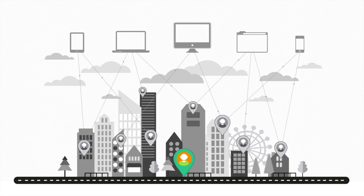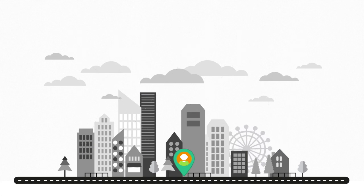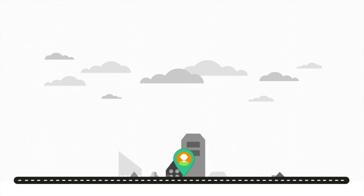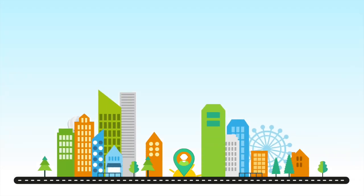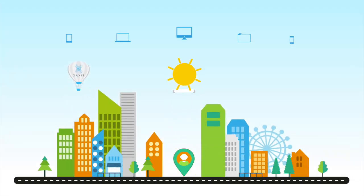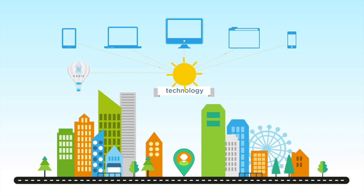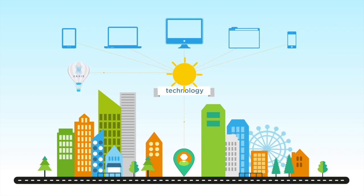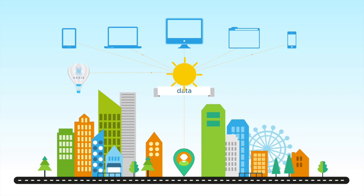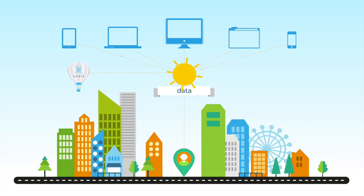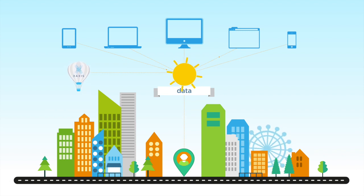No matter where they might be — that's where programmatic comes in. Quite simply, programmatic is the use of technology to facilitate and automate media buying, and applying data to target users based on who they are, whether on-site or across the web.